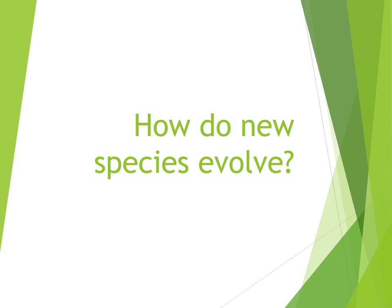Good morning guys. Today we're going to talk about how you get new species — two species evolving from one ancestral species. These are your notes, so if you have your science notebook take it out and write this down as a title. If you don't have your notebook, start a new page. You'll use this stuff next week when we have our evolution unit test, and yes, you get to use all these notes on the test.